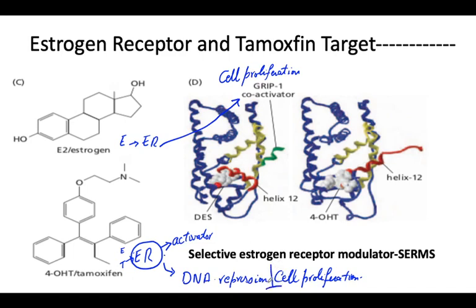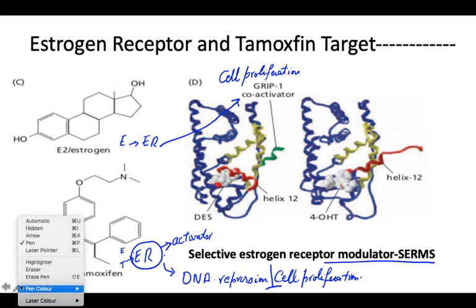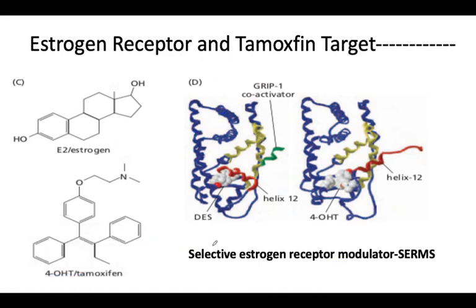This is how we are designing selective estrogen receptor modulators. In cancer research, we can create tamoxifen-like molecules that inhibit cell proliferation.